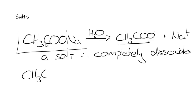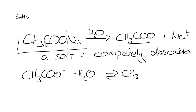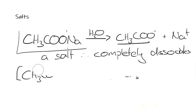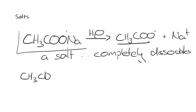CH₃COO⁻ could react with water to form CH₃COOH plus OH⁻, but we're not actually changing the concentration of ions, because we've got one ion on each side. So the concentration of ions stays the same. Any salt will completely dissociate in water, which increases the concentration of ions. So if we compare sodium ethanoate to ethanoic acid, sodium ethanoate would conduct better, because it completely dissociates and there's a greater concentration of ions in the solution.